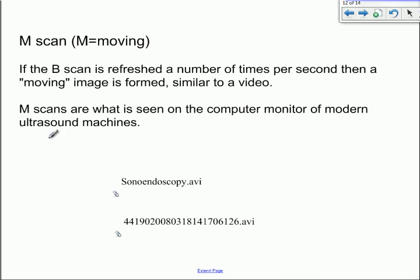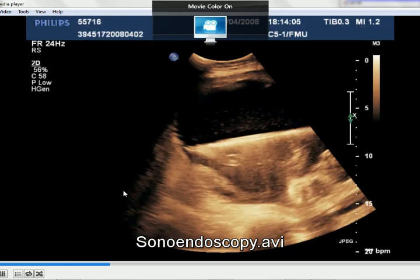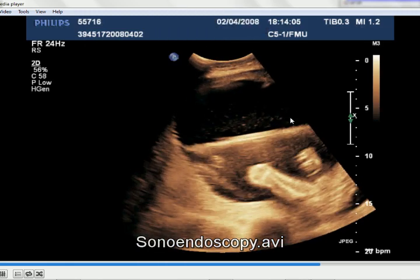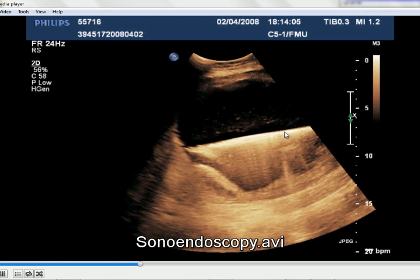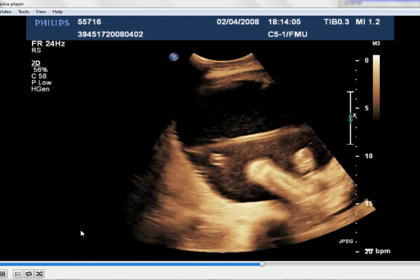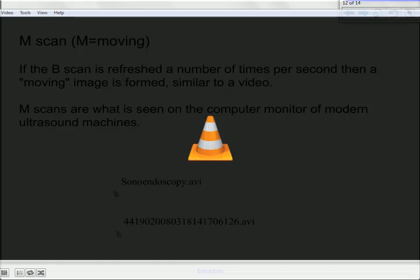And we've got a couple of little videos here. I'm going to show you one of them here, if I can get this to load up. So there we go. So you can see there, each of these individual lines, let's just play that again, each of these individual lines is an A scan. And many A scans at different angles make up a B scan, and that B scan is then refreshed many times a second to give you a moving image. Looks like a fetus's arm there, perhaps.